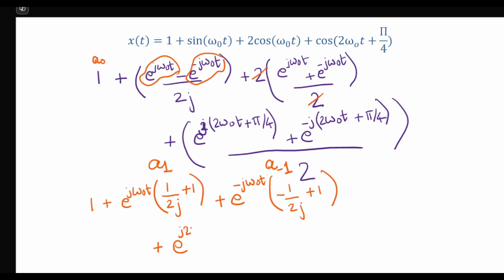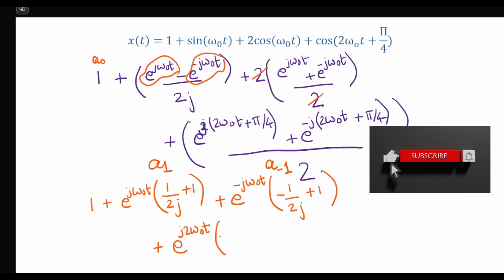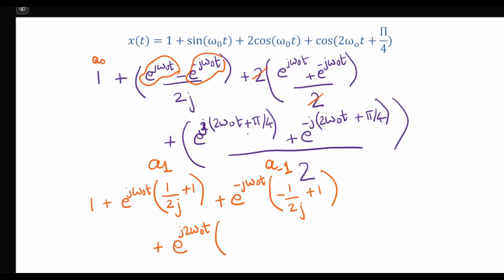For the second harmonic, the term e^(j2ω₀t) has coefficient e^(jπ/4) / 2, so a₂ = e^(jπ/4) / 2.